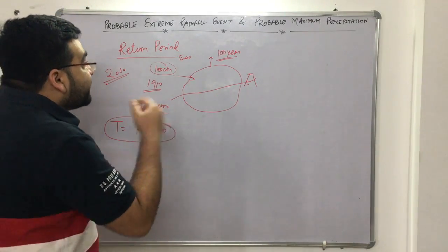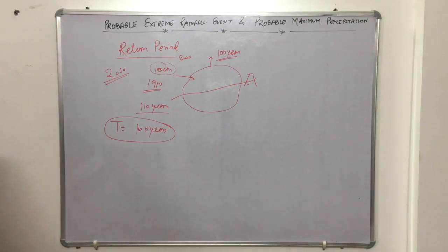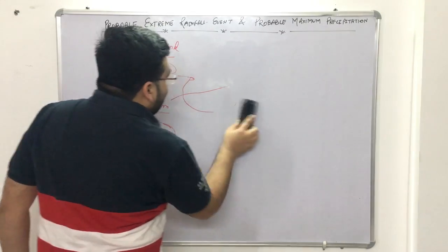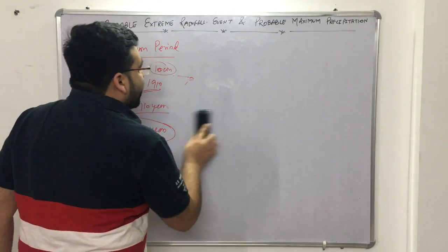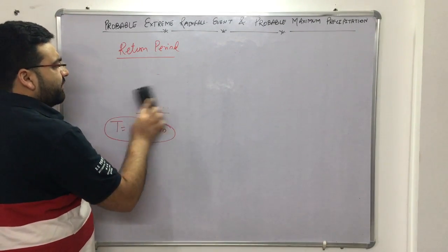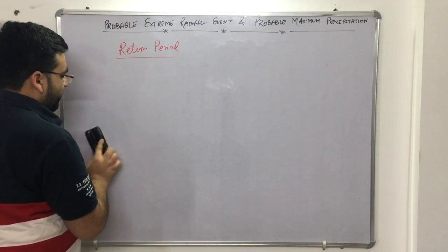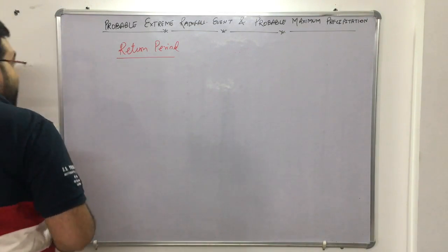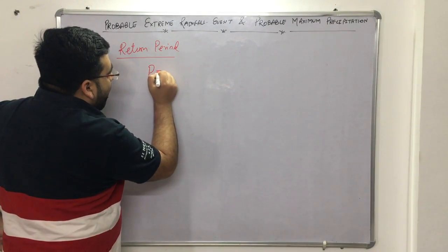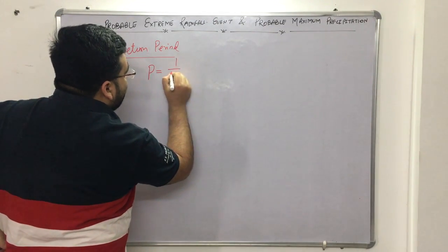Now let's come to the concept of return period and its probability. A question from this topic appeared in GATE 2020 — it was a very easy question. The probability of a storm with return period T is equal to 1 divided by T, where T is the return period.